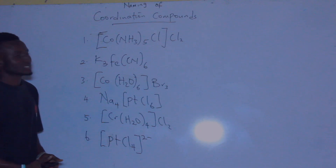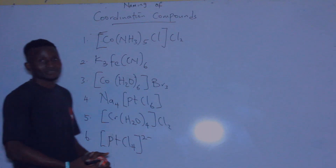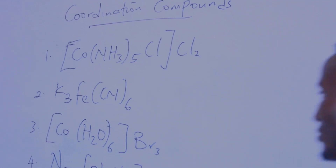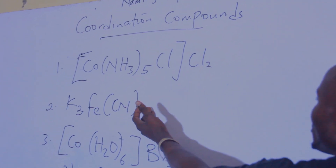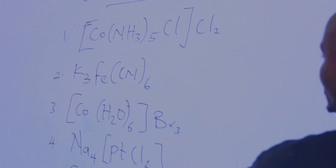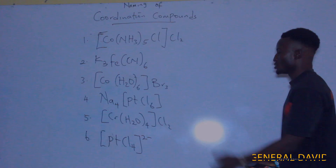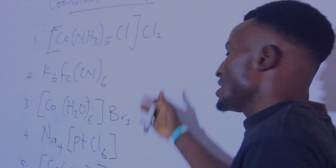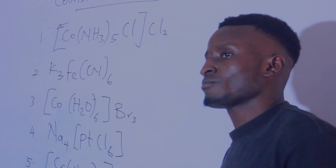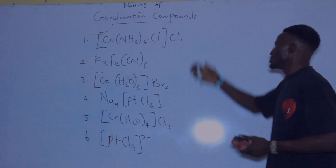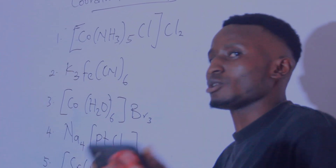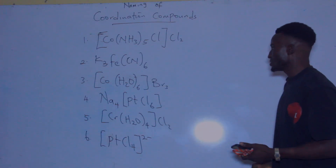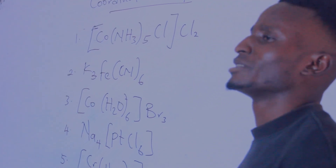As you can see, we have different structures here — the first one, second one, third one, fourth one, fifth one and sixth one. This is what we'll be looking at today. These are complex compounds, so how do we go about naming them?